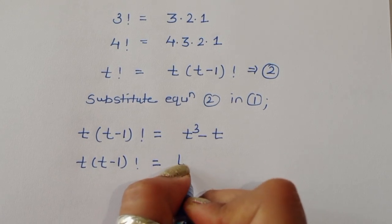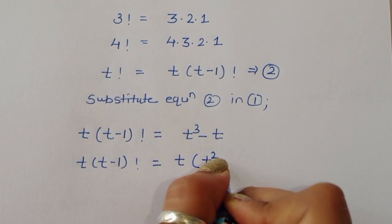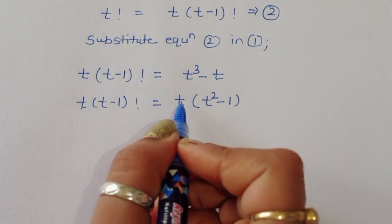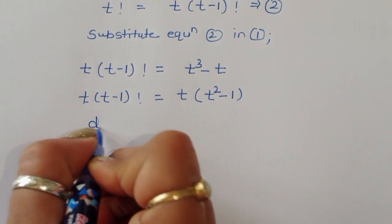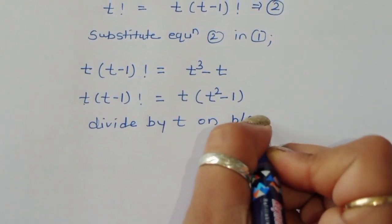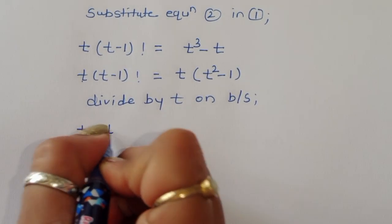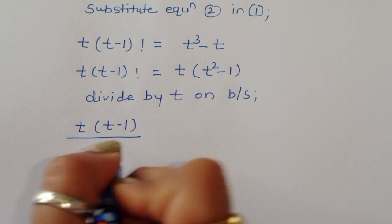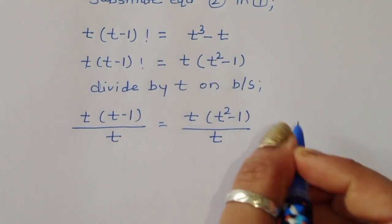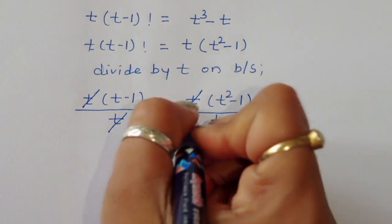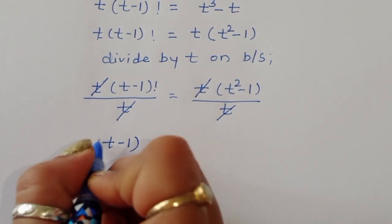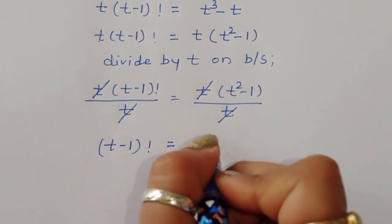On the right-hand side we can take t common, giving t times (t squared minus 1). Since t appears on both sides, we divide both sides by t, giving: (t minus 1) factorial is equal to t squared minus 1.